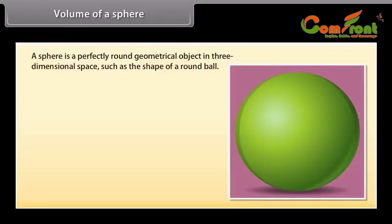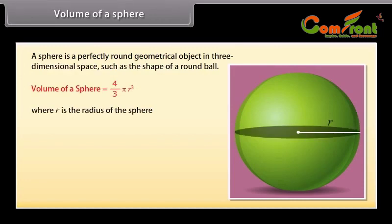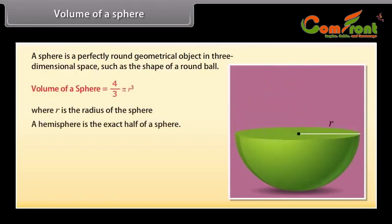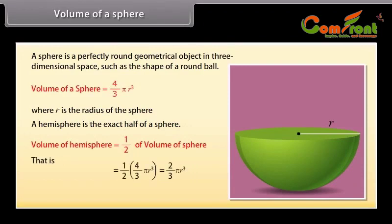A sphere is a perfectly round geometrical object in 3-dimensional space, such as the shape of a round ball. The volume of a sphere is given by V = (4/3)πR³, where R is the radius. A hemisphere is exactly half of a sphere, so the volume of a hemisphere is (1/2) × (4/3)πR³ = (2/3)πR³, where R is the radius.